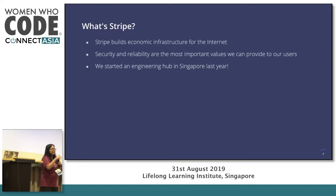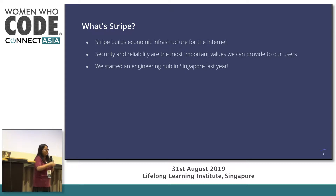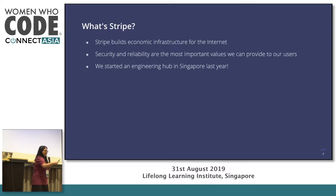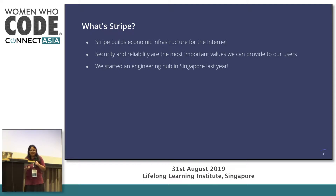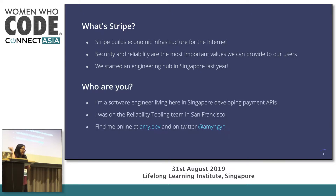What is Stripe? Stripe builds economic infrastructure for the internet, which really just means we help people build businesses on the internet, take payments, anything you want to do. We have an engineering office out here in Singapore. Since we help people process payments on the internet, security is a huge deal — we are processing raw credit card information, which is highly sensitive and highly regulated. And on your side, reliability is a huge deal. You don't want to take money from a user and then drop that information.